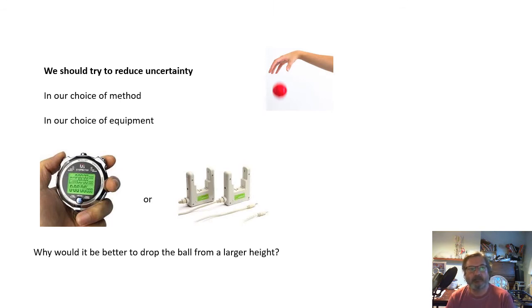When we design experiments, we should try to reduce uncertainty, and there's two main ways of doing that: in our choice of method, in the way that we do the experiment, and in our choice of equipment.